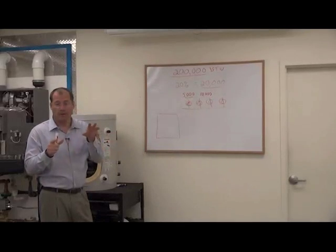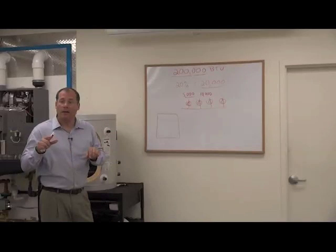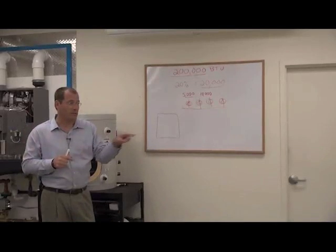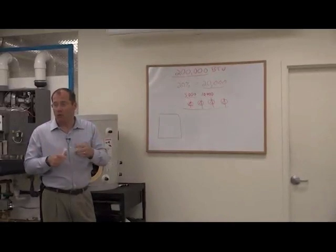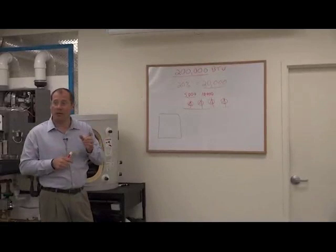The best way is to perform a heat loss and gain calculation, which looks at the envelope of the house and says, if I want to be 70 inside and it's zero outside, how many BTUs do I need in this room and in this room and in this room? Add all those up and that's your total BTU requirement. That's the right way to size it.